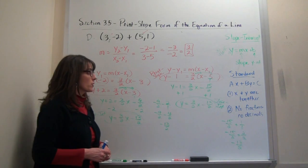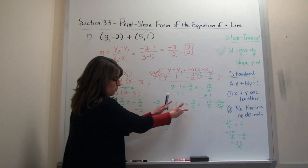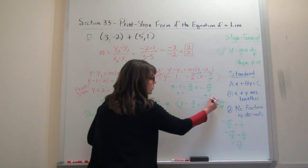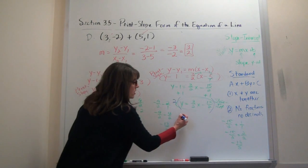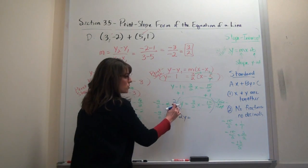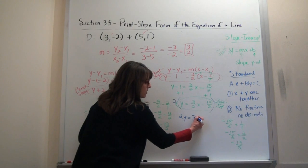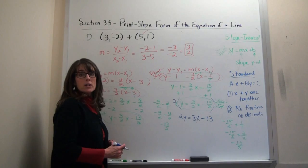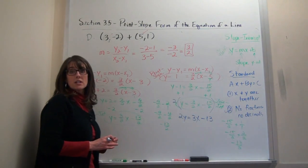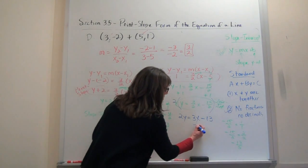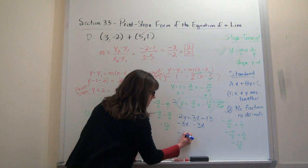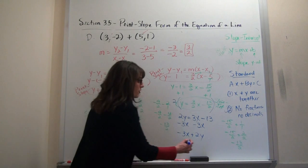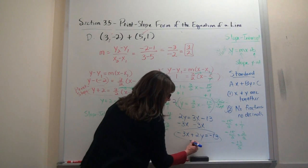For standard form, working with y equals 3 halves x minus 13 halves: multiply everything by 2 to clear fractions. 2y equals 3x minus 13. Subtract 3x from both sides: negative 3x plus 2y equals negative 13. No fractions, no decimals, x and y together — that's standard form.